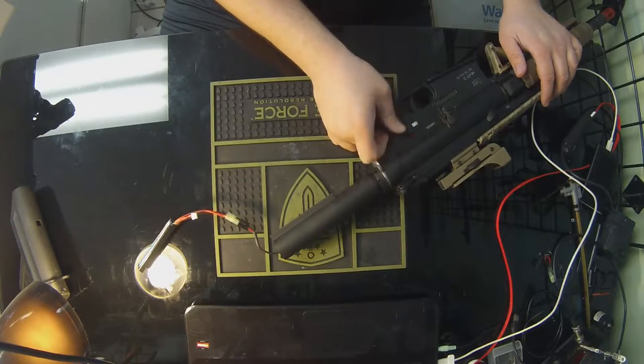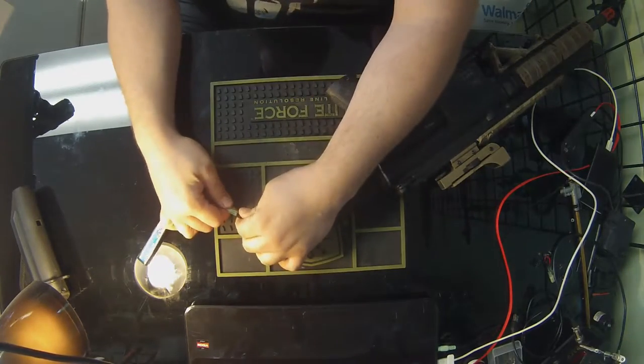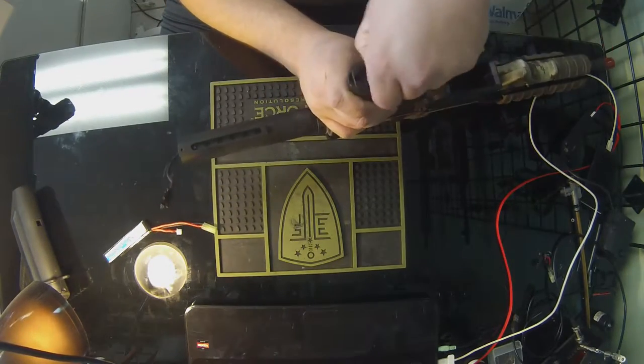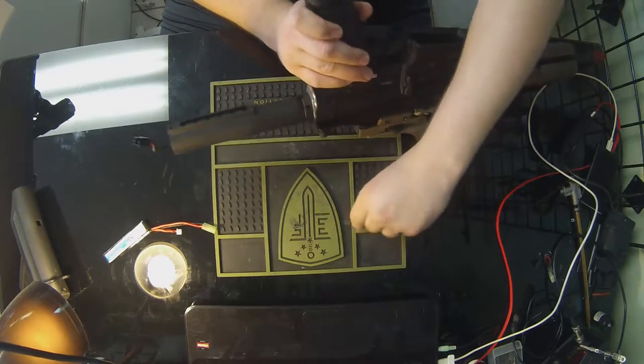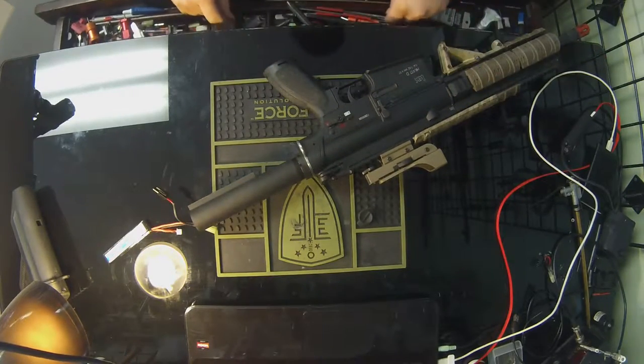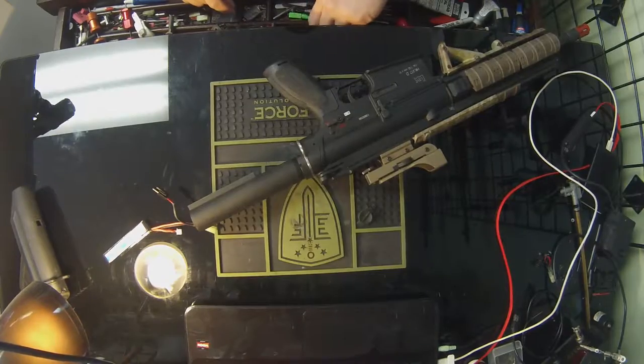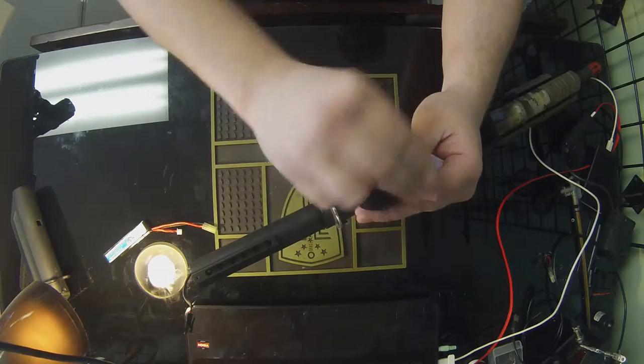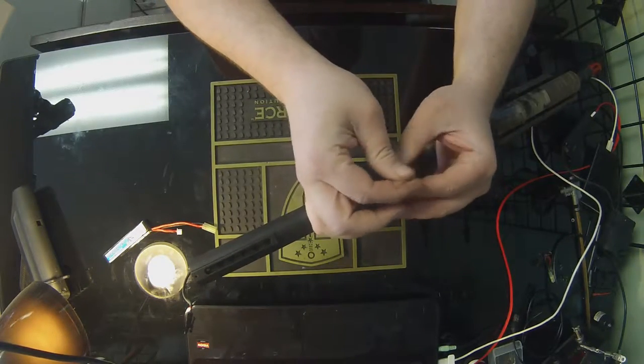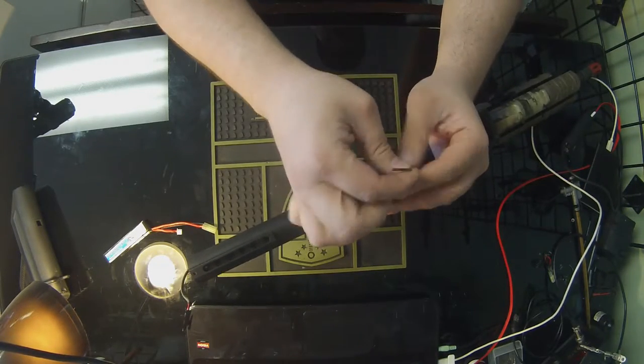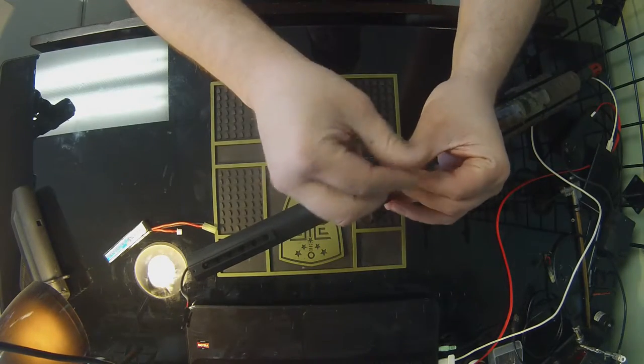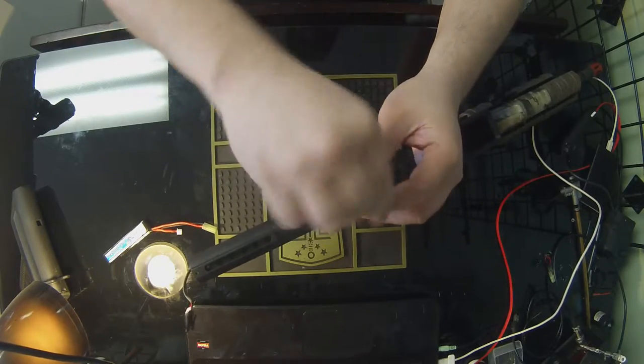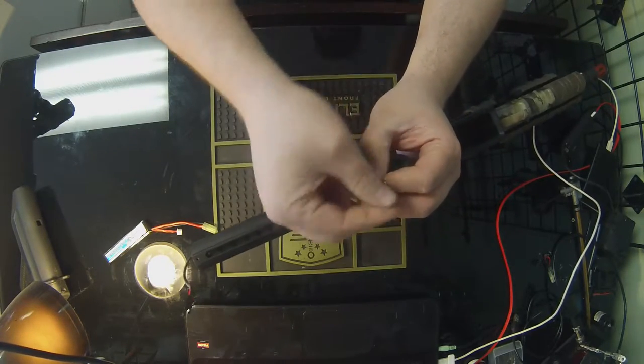We got it in there, the wires seem firm, everything seems good. We're going to pull the trigger - we got nothing. Full auto, nothing. So one of the next steps I like to do before I tear apart everything is I like to check the motor plate, take it off, and we actually check to see if the connections are on the motor terminals itself.